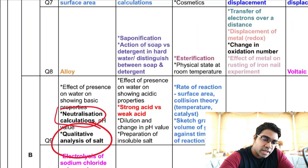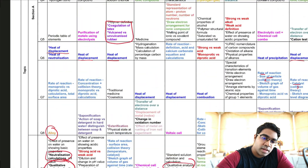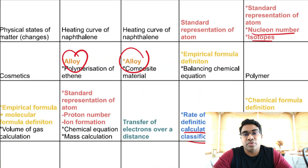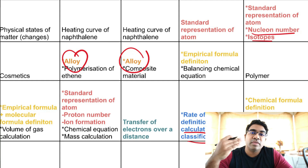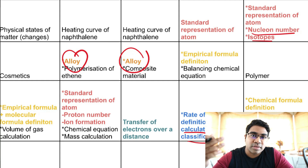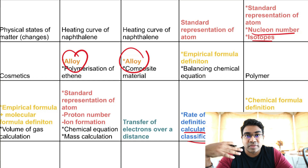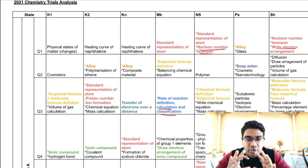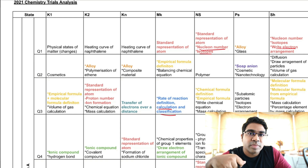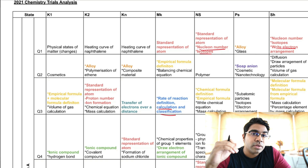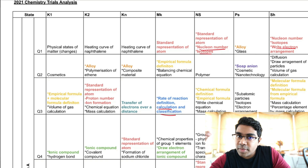One more topic is alloy — if it comes out it's quite a standard question. There will usually be some question regarding the hardness of the alloy and why it is harder than pure metal, which you have to explain using the sliding of atoms. The link to this document will be left in the description below so you can download it. Don't forget to look out for the last minute revision video, which will come out very soon.